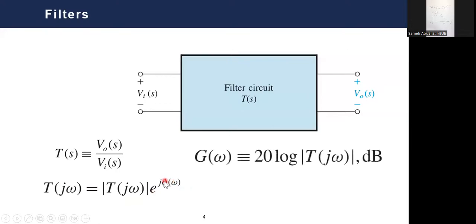You can determine the gain of the system, which is simply 20 log|T|. Whenever you consider a parameter in dB, it's 10 log power or 20 log voltage. Since the transfer function is given in voltage, squaring it and multiplying by 10 gives 20. So the gain in dB is 20 log of the transfer function magnitude. We can define four main types of filters: the most famous is the low-pass filter.